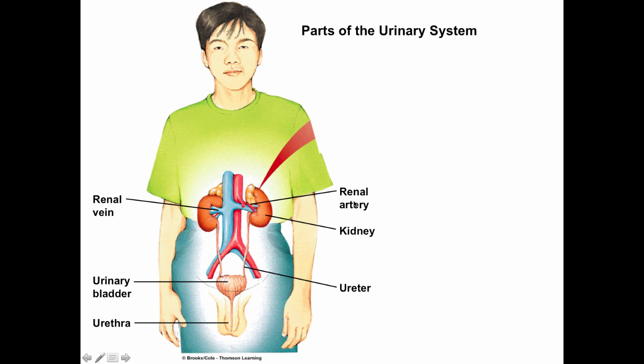The kidneys are urine-forming organs — that is really their primary function. By forming urine, they act as one of our major filtering organs. They take blood, filter it, and remove waste, excess fluid, excess electrolytes, allowing all of that to be removed from the body. In addition, the kidneys are the primary route of elimination for nearly all the drugs we take.